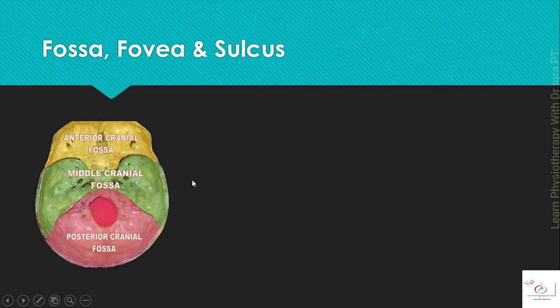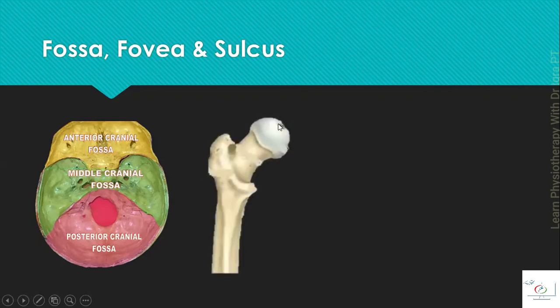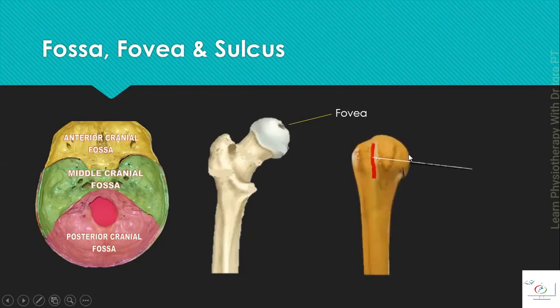Then the fovea, a shallow depression. The example is the fovea on the head of the femur. Then the sulcus, intertubercular sulcus of the humerus. The sulcus is a depression with some length. And why it is named as intertubercular? Because it is present between two tubercles. And what are the tubercles? We will study it later in these slides.